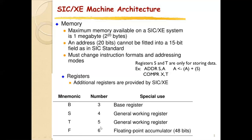Register B is used as the base register for addressing, similar to register X. Registers S and T are general-purpose working registers with no special use. SIC/XE supports floating point numbers — there is floating point hardware on the SIC/XE machine. Register F is the floating point accumulator and is 48 bits wide, while registers B, S, and T are 24 bits (3 bytes) in length.